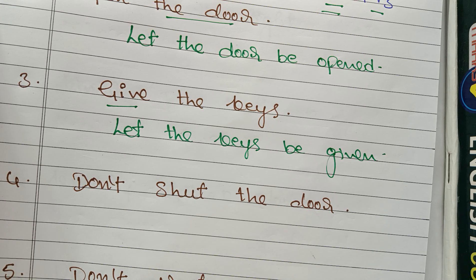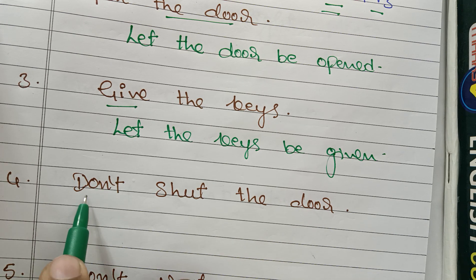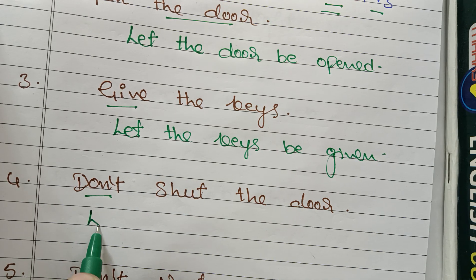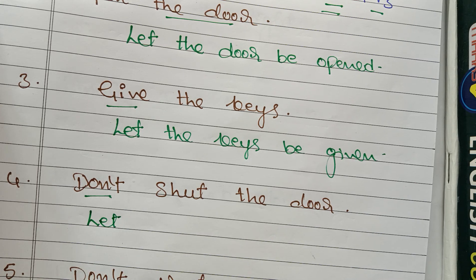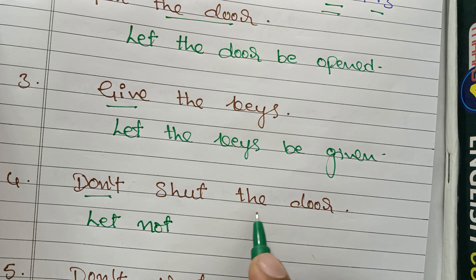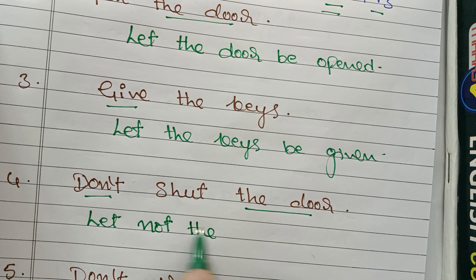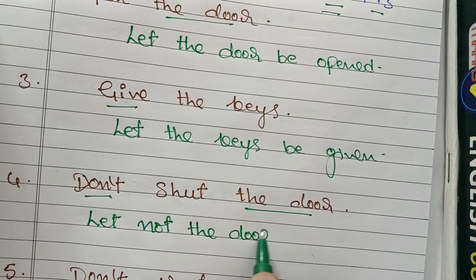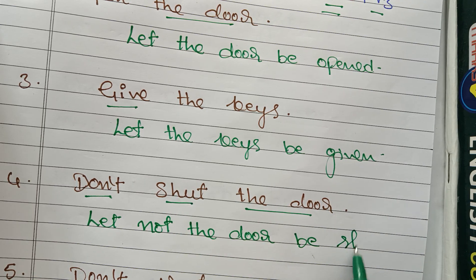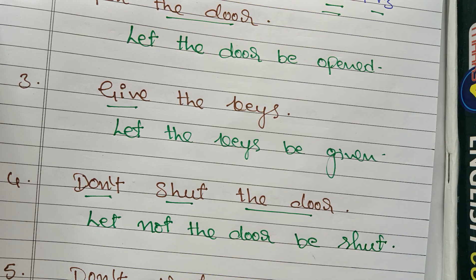Fourth example: 'Don't shut that door.' It is in the negative form. So use the 'let' form, but when it is negative you have to use 'not.' What is the object? The door. So: 'Let not the door be shut.'